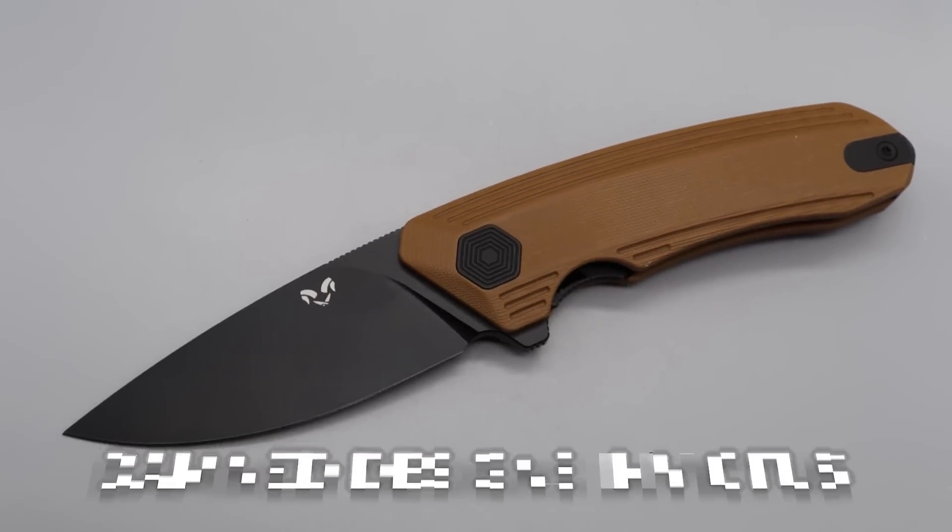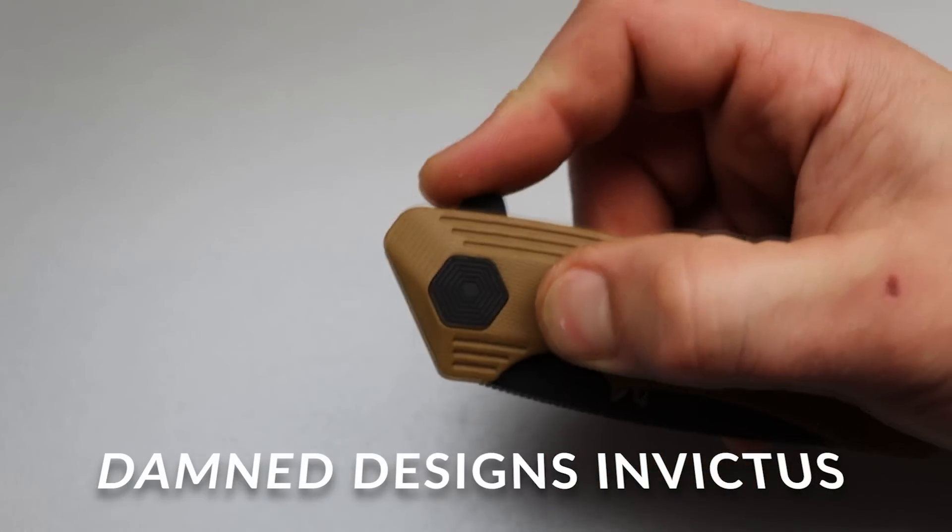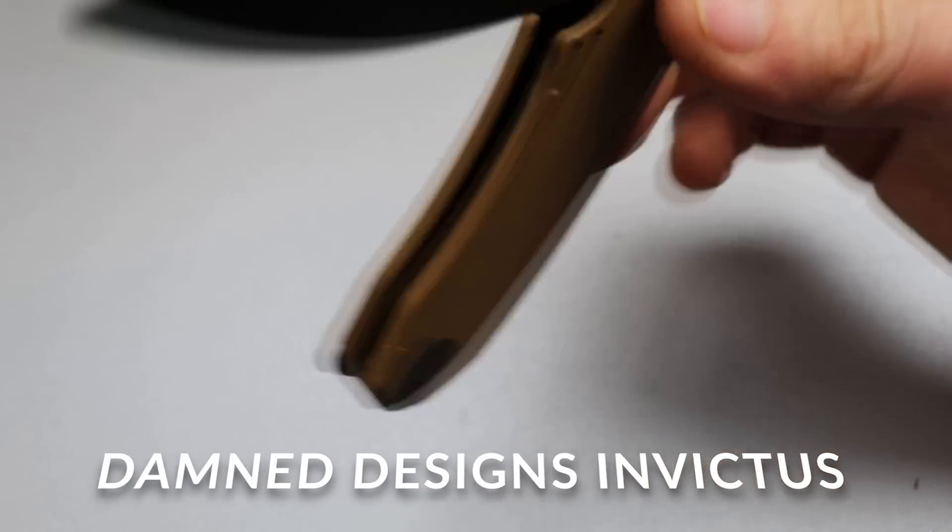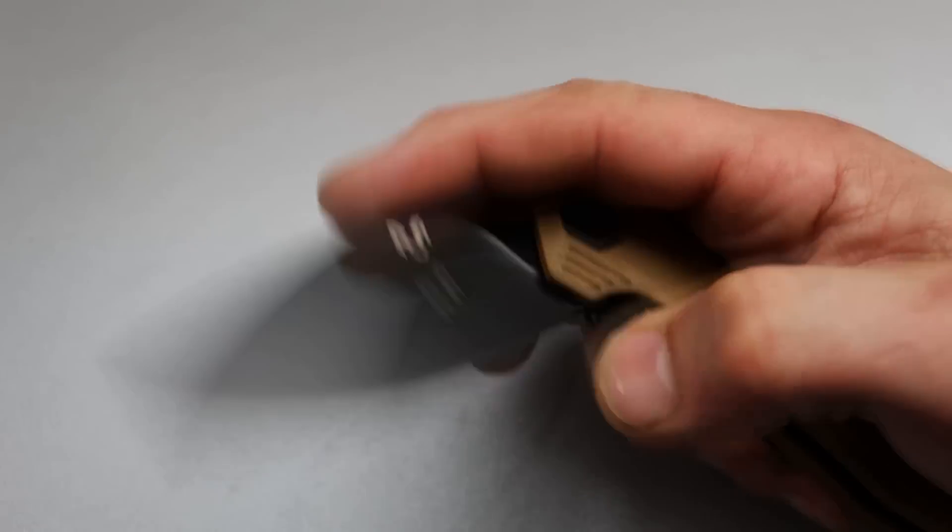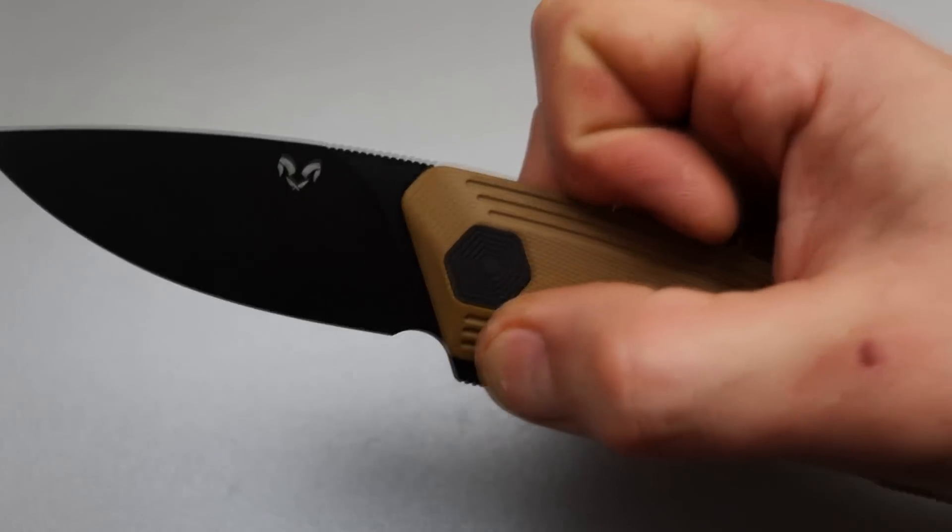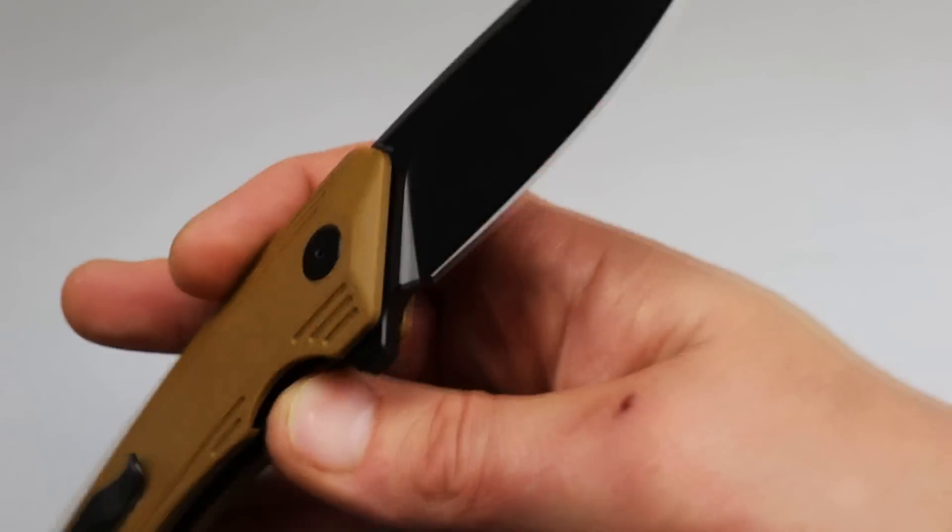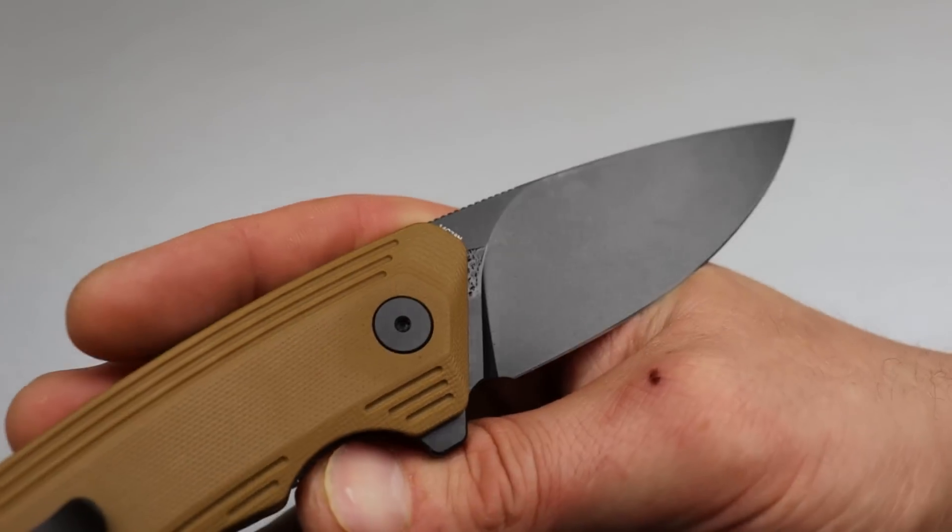Starting it off, we have the Damned Designs Invictus. Amazing flipping action, nice and snappy, very comfortable flipper tab by the way, and it has a beautiful drop point 14C28N steel blade.